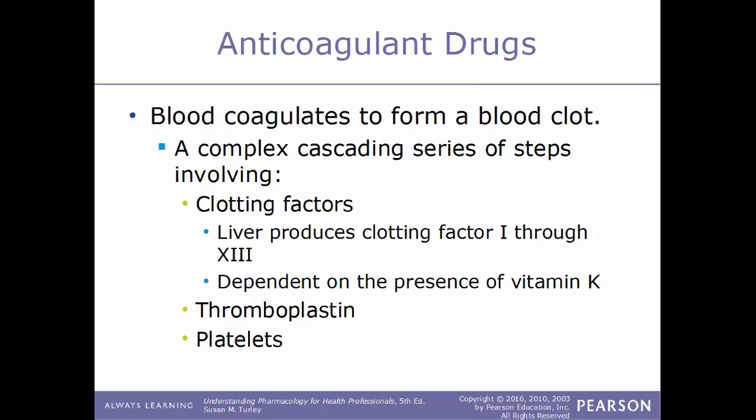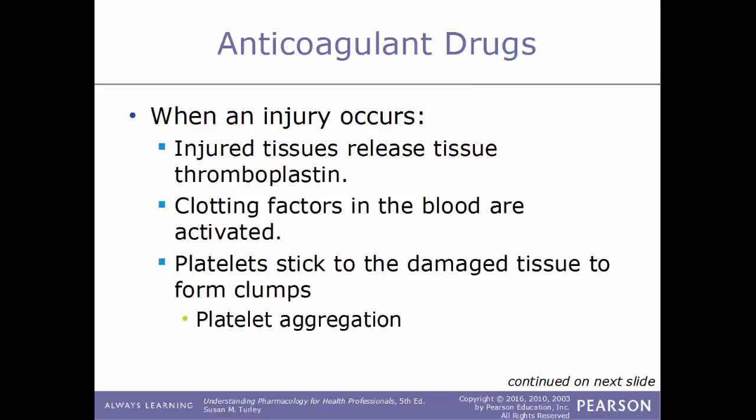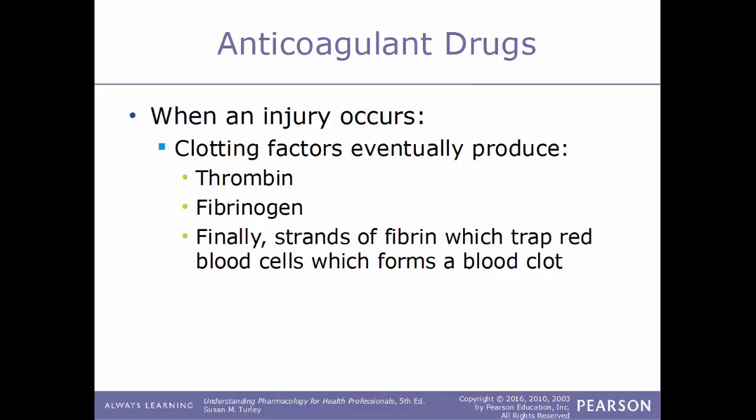Some other key components of clot formation are thromboplastin and platelets. When an injury occurs, the injured tissue releases thromboplastin, which activates the clotting factors within the blood. As this happens, platelets normally floating in the blood start to stick to the damaged tissues to form a platelet plug — a process called platelet aggregation. The sooner platelets clump together, the quicker blood loss can be prevented.